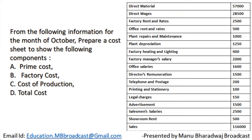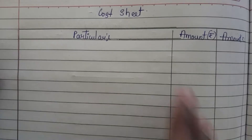So there is direct materials, direct wages, factory rent and rates, office rent and rates, and so on. Now let us see how to solve this problem.